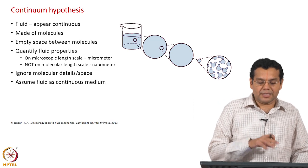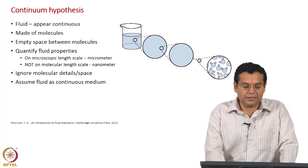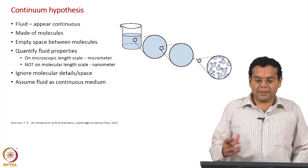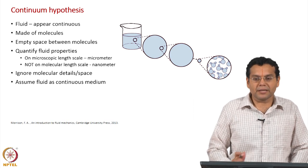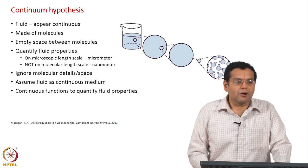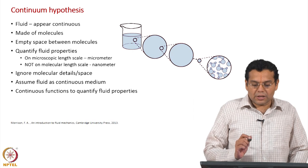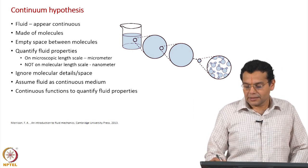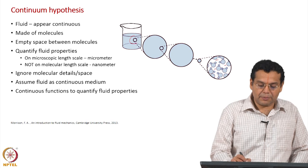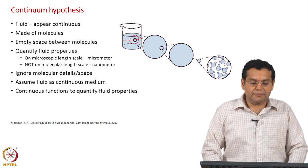Though at the molecular level it is made up of molecules, we are going to ignore that molecular picture and say that everywhere, without leaving any space, the space is occupied by liquid or gas. The implication of this is that all the fluid properties can be taken as continuous functions of space. If you take the molecular picture there will be discontinuities, but if you assume the continuum hypothesis you can assume continuous variation of all fluid properties.